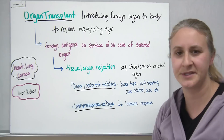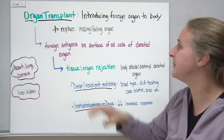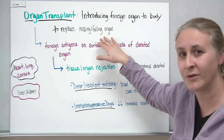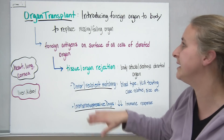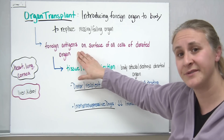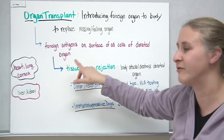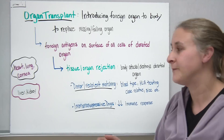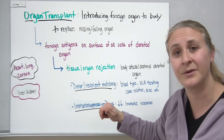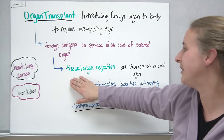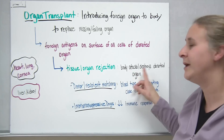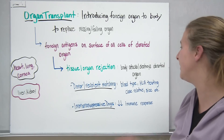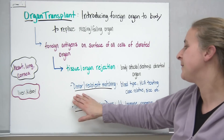Another topic related to immunity is organ transplants. When you receive an organ transplant — perhaps to replace a missing, damaged, or failing organ — you're introducing something foreign into the body. The problem is that the donated organ's cells have antigens on the surface of their cell membranes that are foreign. Your body can recognize those antigens as foreign, think they're harmful, and attack them, leading to tissue or organ rejection where the immune system destroys the donated organ.